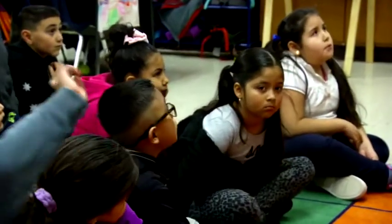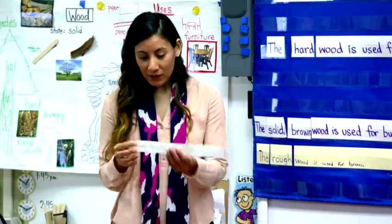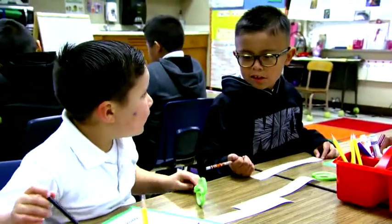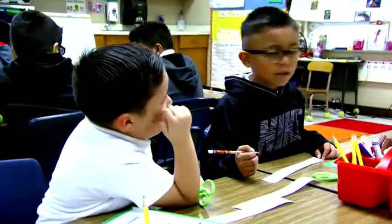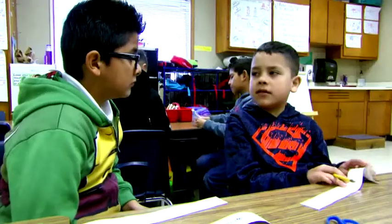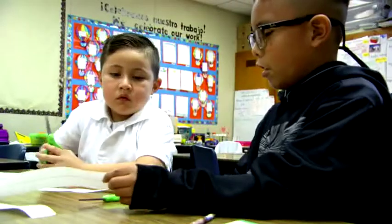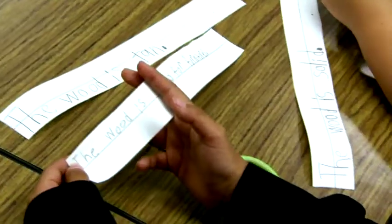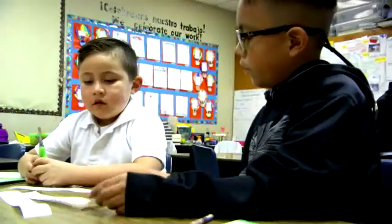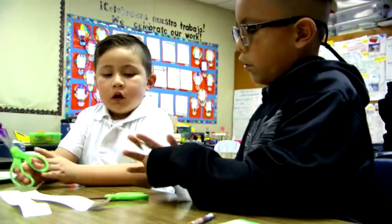If you are in the ELD group Solids, you are going to walk to your desk and you will have sentence strips to write sentences. Students work on sentences: the wood is used for carving, the wood is rough, the wood changes when it gets burned, the wood is used for furniture. The teacher guides students through cutting and rearranging sentence strips to construct condensed sentences, such as 'the solid wood is used for furniture.'